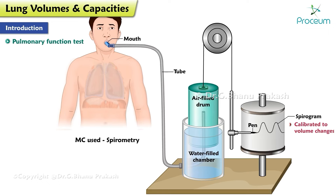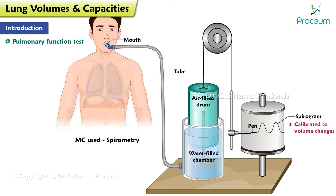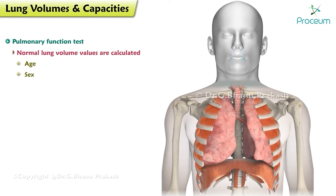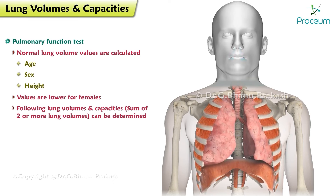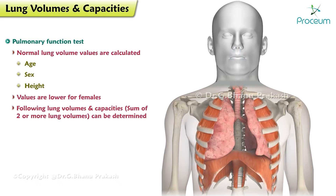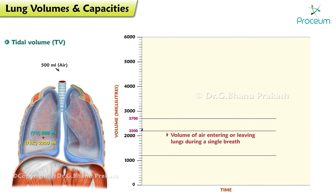The pen records inspiration as an upward deflection and expiration as a downward deflection. The normal lung volume values are calculated according to variables such as age, sex, and height. Generally, the values are lower for females. The following lung volumes and lung capacities — that is, the sum of two or more lung volumes — can be determined using pulmonary function tests.